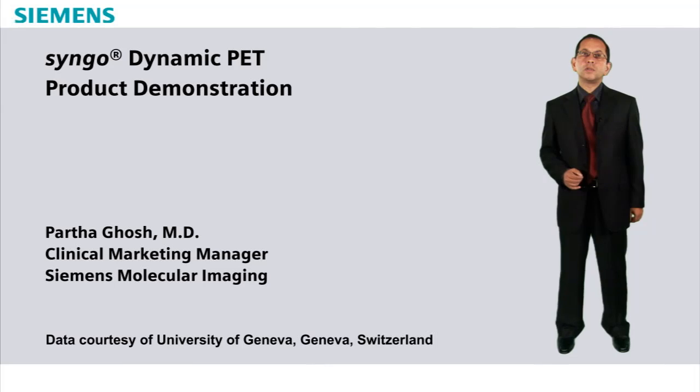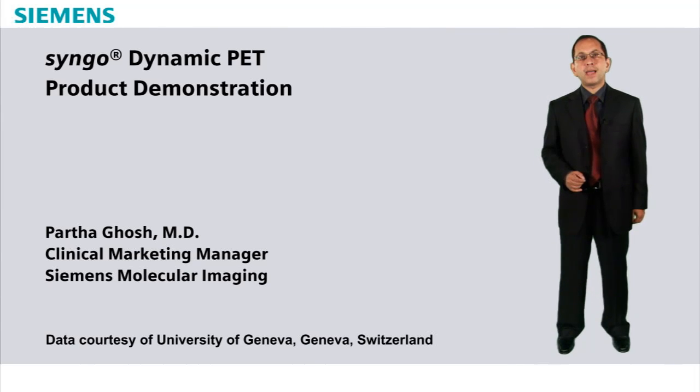Syngo Dynamic PET is a recently launched software package from Siemens Molecular Imaging for myocardial blood flow quantification. It provides a fast and user-friendly platform to obtain reproducible measurements of myocardial blood flow at peak stress and rest, generate coronary flow reserve values, and display the results in parametric polar plots for easy reviewing.